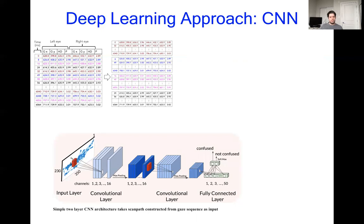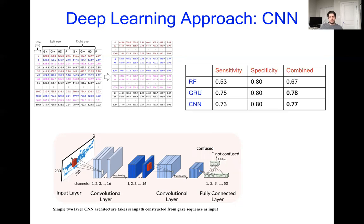So the second thing we did is we used these scan paths and processed them through a simple two-layer CNN. And what we found was that this resulted in a similar increase as that achieved by the RNN, both of which were significant improvements over the random forest classifier.